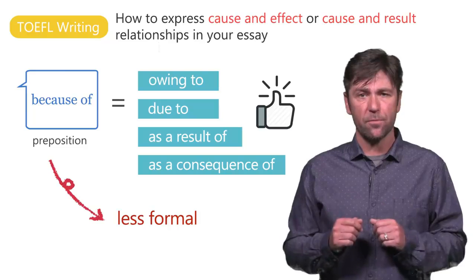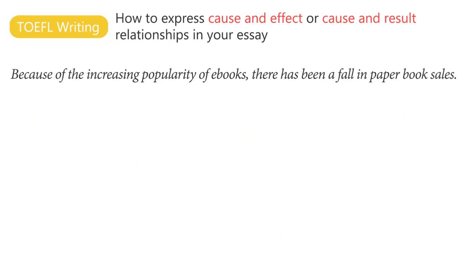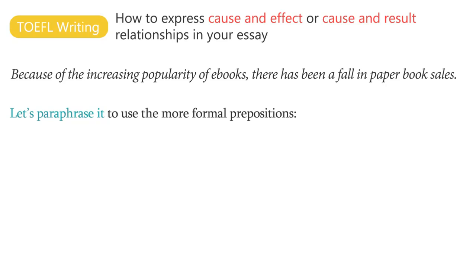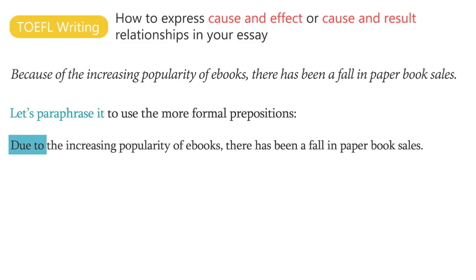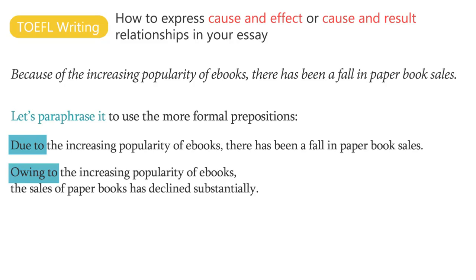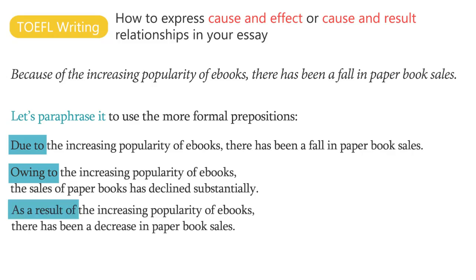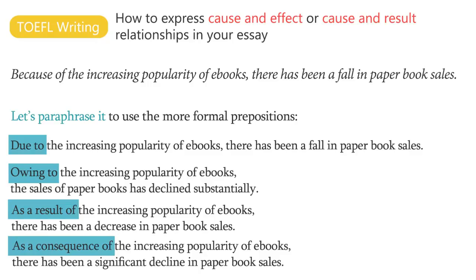Let's look at an example sentence: Because of the increasing popularity of e-books, there has been a fall in paper book sales. Let's paraphrase it using more formal prepositions. Due to the increasing popularity of e-books, there has been a fall in paper book sales. Owing to the increasing popularity of e-books, the sales of paper books have declined substantially. As a result of / As a consequence of the increasing popularity of e-books, there has been a significant decline in paper book sales.